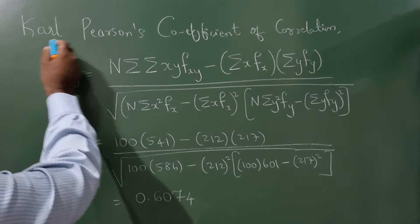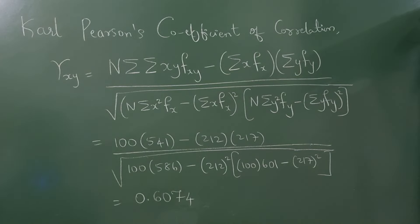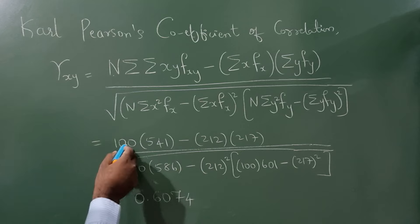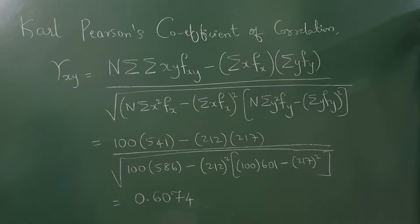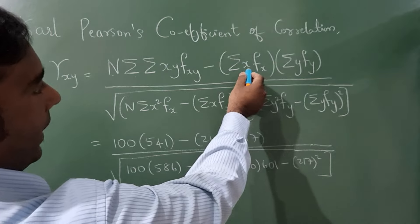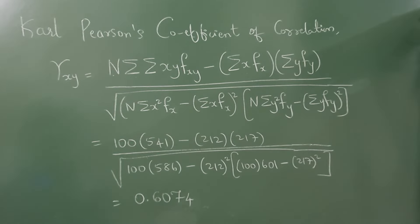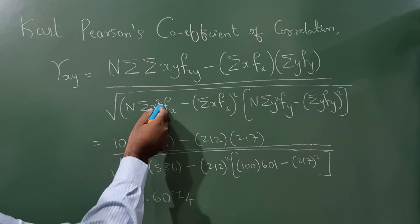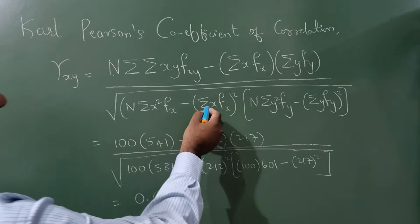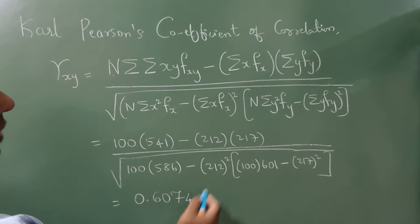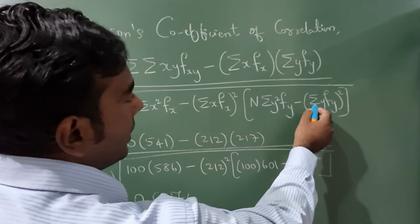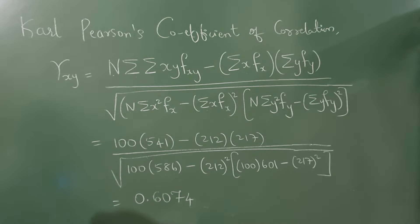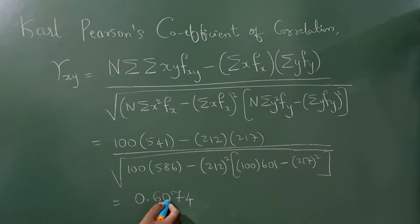Now applying the Karl Pearson coefficient of correlation formula. Here n = 100, summation of xy·fxy = 541, summation of x·fx = 212, summation of y·fy = 217. Under the square root: n×Σx²fx minus (Σxfx)² gives 100×586 minus 212², and n×Σy²fy minus (Σyfy)² gives 100×601 minus 217². Calculating from these values gives the final answer r = 0.6074.